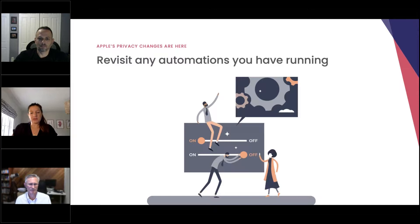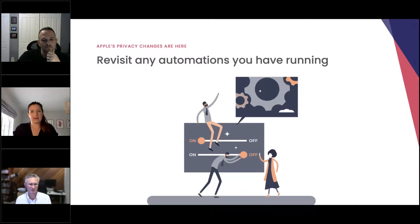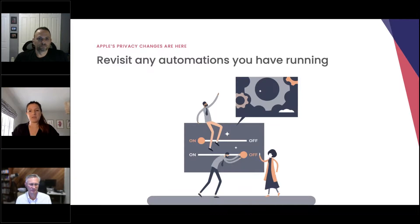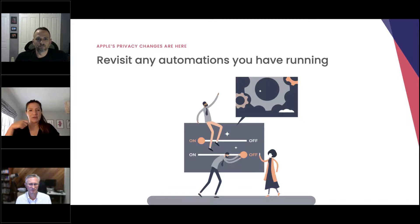Next, we have automations. Some may be using customer journeys or email automation to help tick along your email campaigns so they run without having to manually update them every week or few days. If you are running any automations, I would strongly urge you to have a look at the trigger that is relied upon. If they are based on email opens, you may have started to see more people run through those automations because your system thinks more people are opening them. So it could be a good opportunity to change that variable within the automation to switch it to click-through rate, and perhaps refresh your campaigns by looking at calls to action, offers, and images.